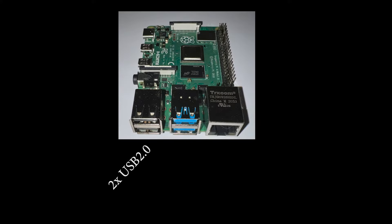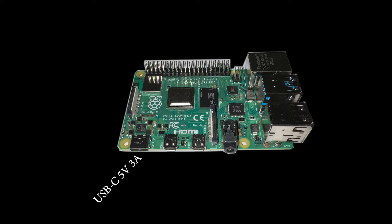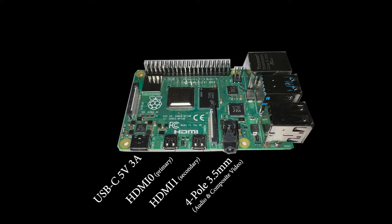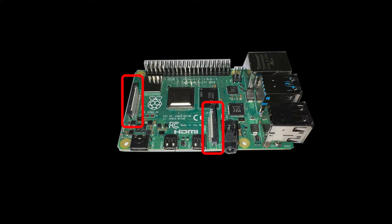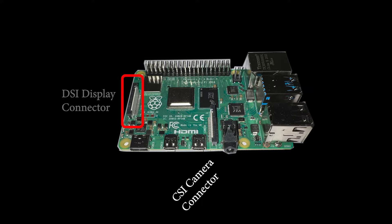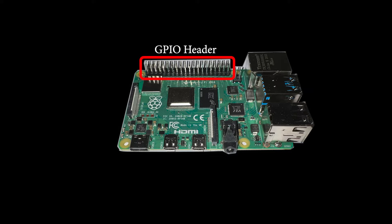If you haven't used a Pi 4B before, you might be surprised by what it includes in such a small package. First things you should recognize: two USB 2.0 ports, two USB 3.0 ports, and a Gigabit Ethernet port. Over here we have the USB-C power port, which expects 5V at 3A. Next to that we have two microHDMI ports — the one nearest the power port is the primary port. There's also a 4-pole 3.5mm audio and composite video port, and two ribbon-style connection ports. The CSI camera connector is where you would connect your Pi HQ camera. The other ribbon port is for a DSI display connection. There's also the GPIO header, which we're only going to use for powering a small fan in our case.